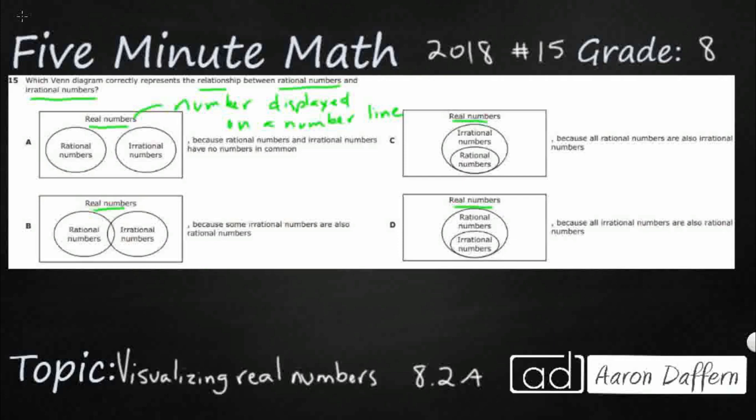Now, within the set of real numbers are two subsets. It's going to be the rational and the irrational. And our question is, how do those two interact?